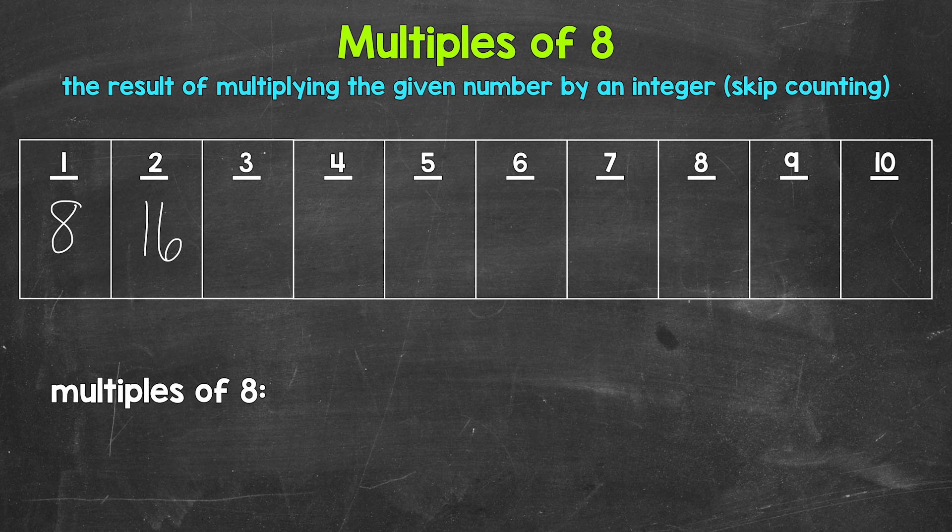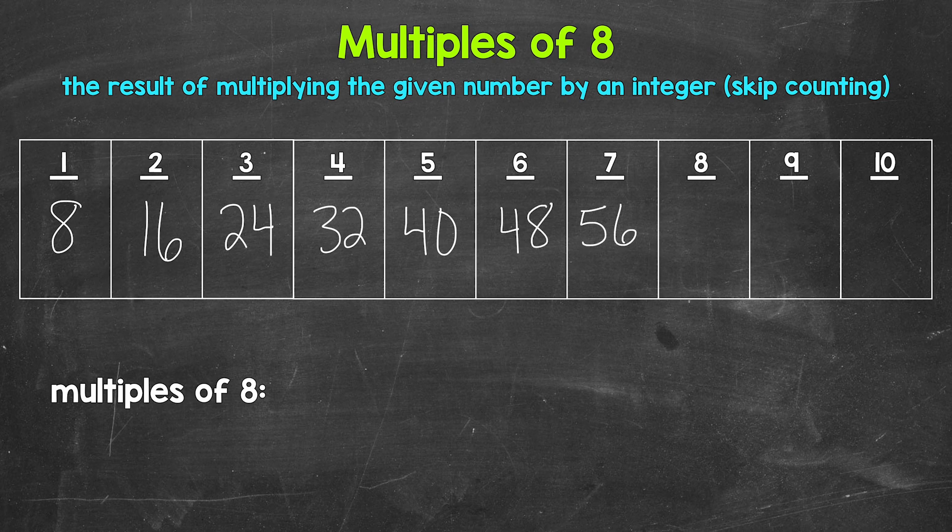Then we have three times eight, that's 24. Four times eight is 32. Five times eight is 40. Six times eight is 48. Seven times eight is 56. Eight times eight is 64. Nine times eight is 72. And 10 times eight is 80. Those are the first 10 multiples of eight.